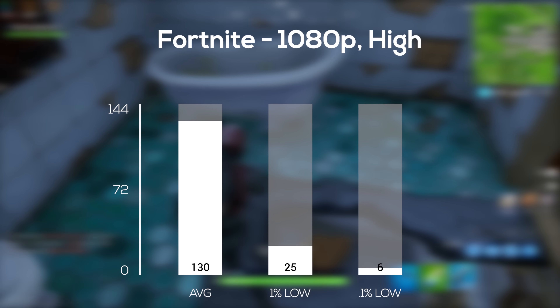Counter-Strike: Global Offensive was up next, and in 1080p and high settings I averaged 124 frames per second, and the lows actually weren't that bad. I was pretty surprised by the CPU and GPU load during this game, because we all know CSGO relies more on the CPU, but this was actually somewhat balanced at least in 1080p.